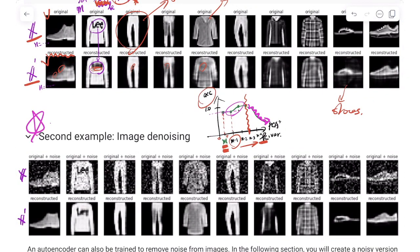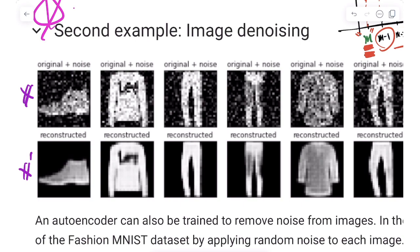The second example is image denoising. We manually add noise to images, then use the same autoencoder structure to perform dimension reduction and reconstruct the image. The encoder removes noise during compression, and when the decoder reconstructs the image, the result becomes very clean — because during dimension reduction, the noise gets discarded.